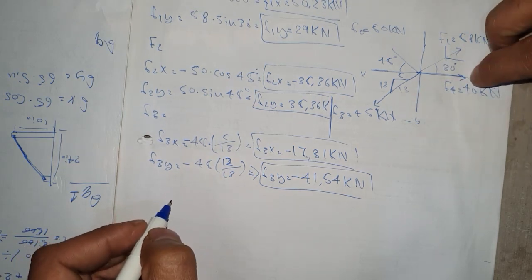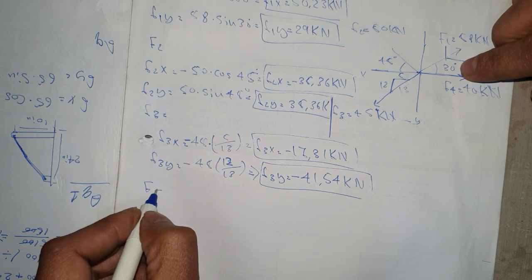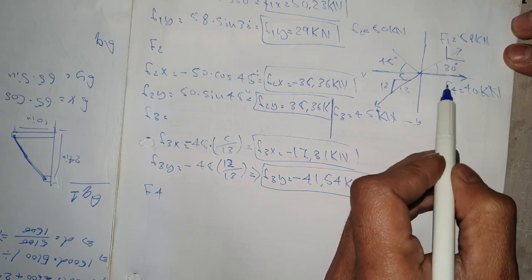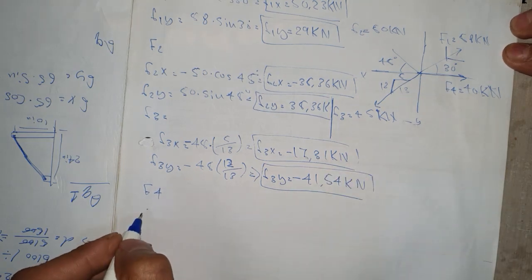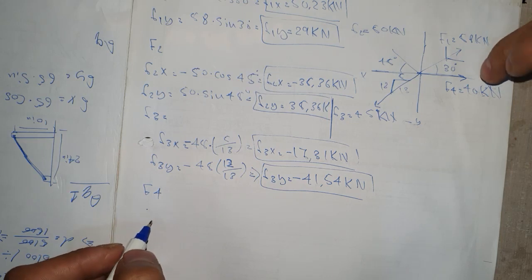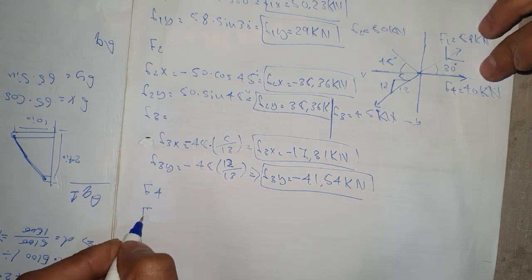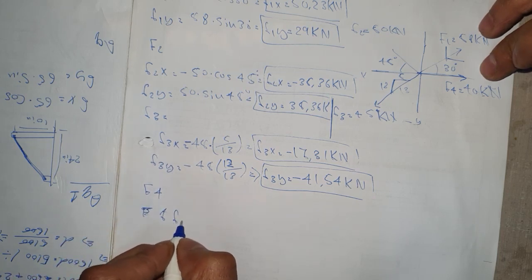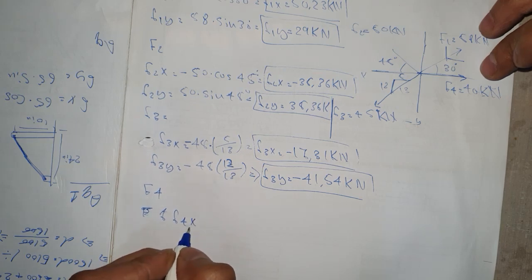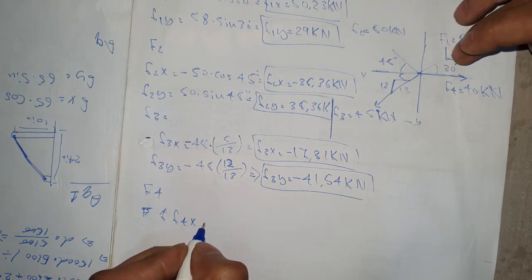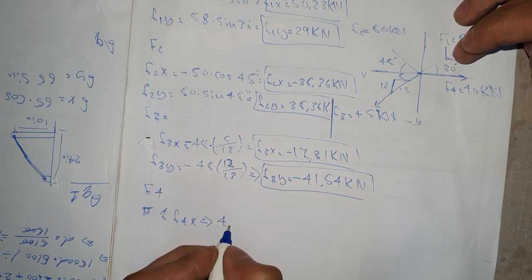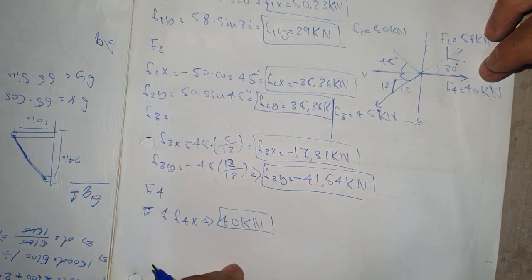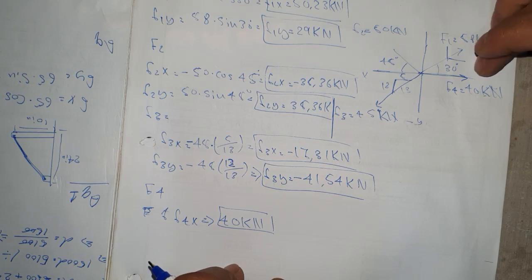For F4, the force acts along the x-axis, so there is no y-coordinate component. F4 only has an x-axis coordinate, and it is equal to 40 kilonewtons.